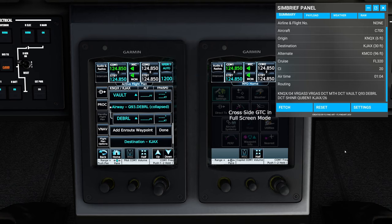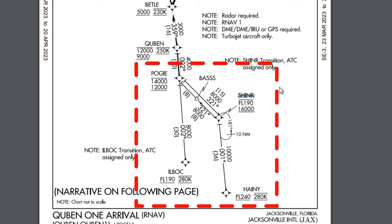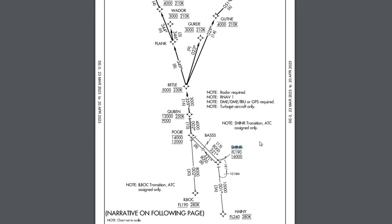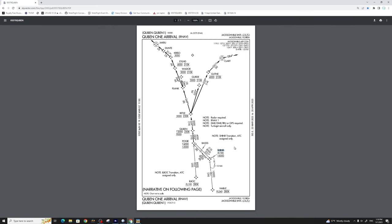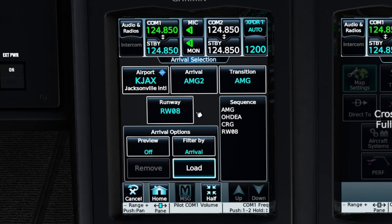Now let's take a look back at the flight plan. After we exit our airway on DEBRIL, we now have to enter the arrival for Jacksonville. I already know that Shiner is going to be a transition. To explain how I found that - if we take a look at the arrival chart, some of the lines are emboldened and other lines are very thin. Any of the waypoints that are along any of these fine lines are transitional waypoints. That's just a little tidbit on how to read these. So now let's go back to the procedure button and enter the arrival by tapping on arrival.